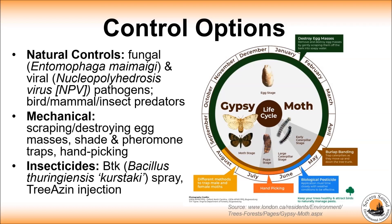Health Canada also indicates that dormant oil, which is a thick oil used on fruit trees, applied late in winter will smother the eggs and prevent them from hatching. In the spring and throughout the summer, you can set up shade traps like a burlap band around the tree and hand pick caterpillars, pupa and moths, then soak them in soapy water to kill them.